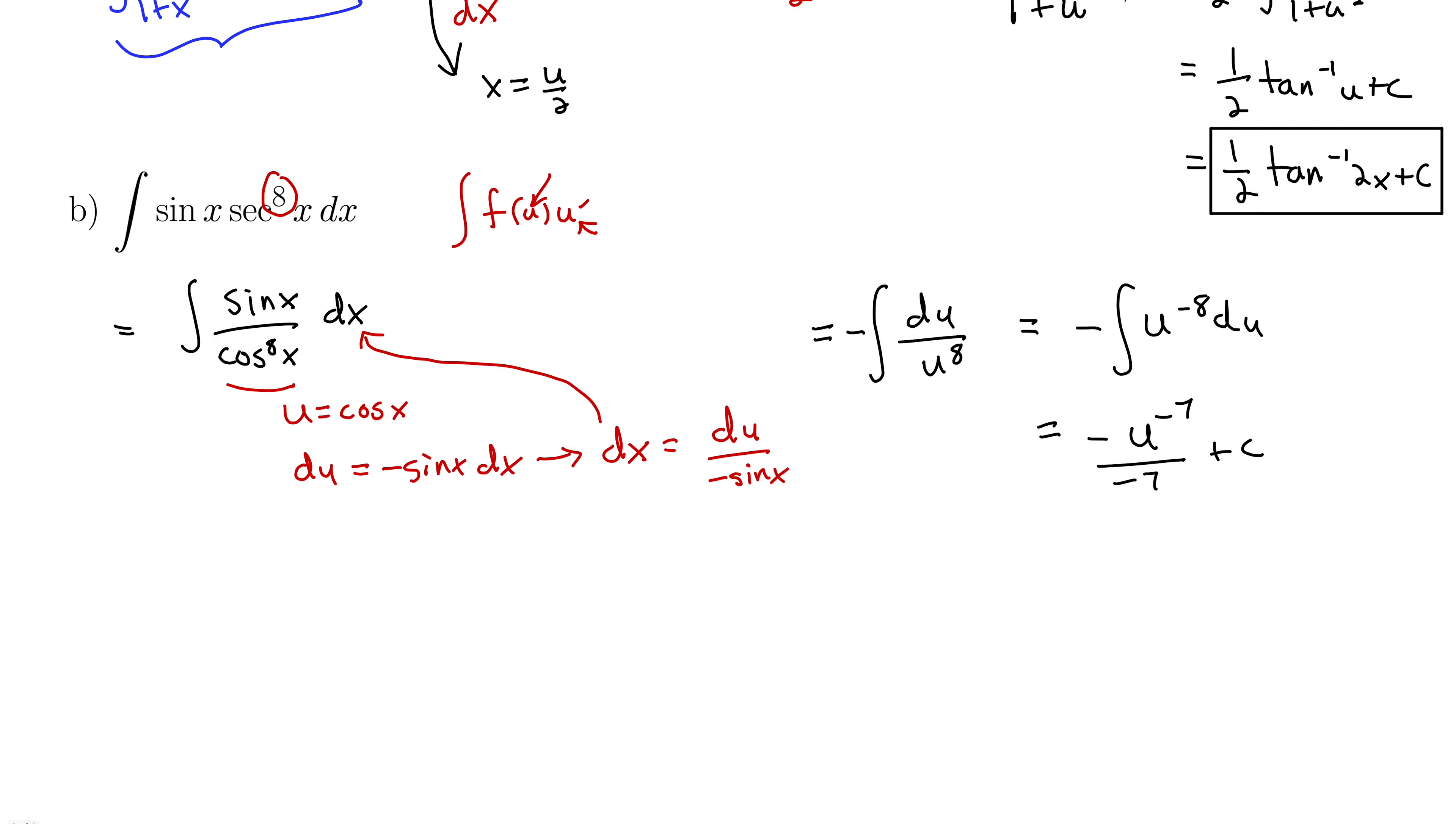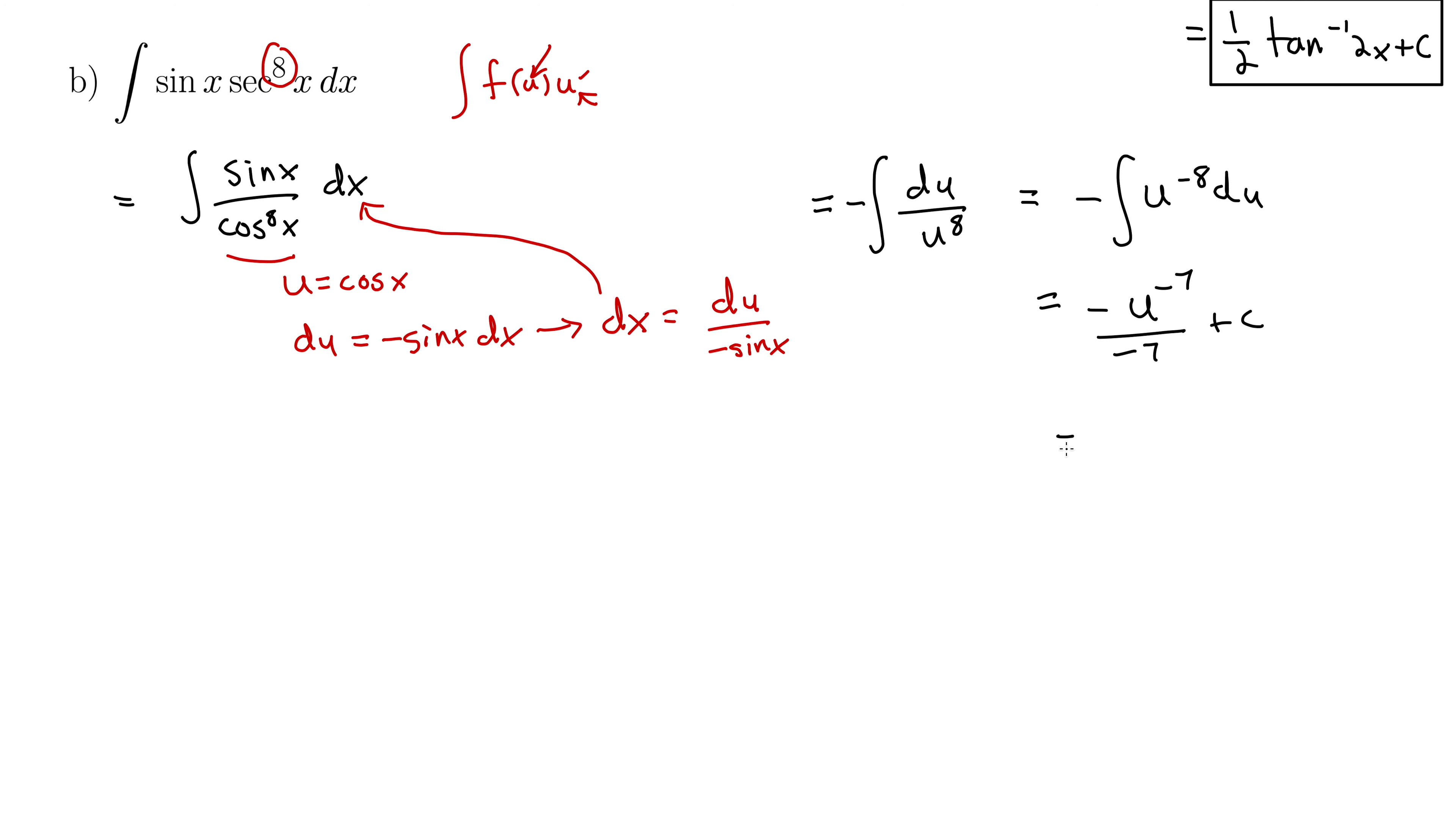Well these negatives will cancel out. This gives 1 7th. I'll write this as 1 over u to the 7th plus c. But remember that u was actually cosine of x. So you want to substitute this in. You want to do a back substitution. Anytime you do u substitution, at the end you always have to go back.